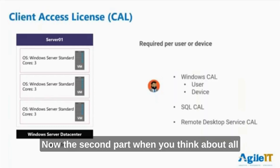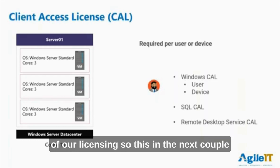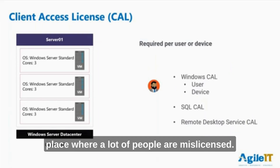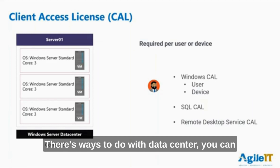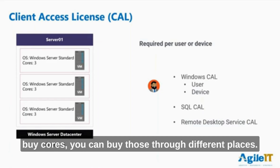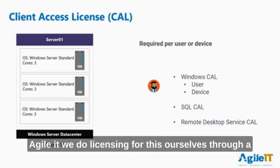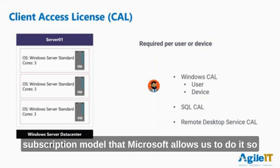Now the second part when we think about all of our licensing — this and the next couple slides — this is where a lot of people are mislicensed. The first part is you pay for the server OS. There are ways to do it with data center; you can buy cores. Agile IT does licensing for this ourselves through a subscription model that Microsoft allows us to do.